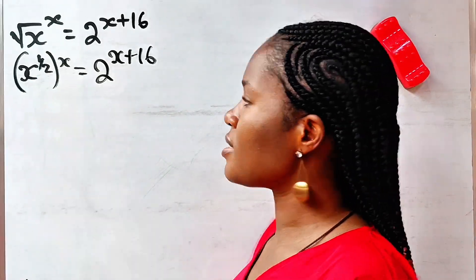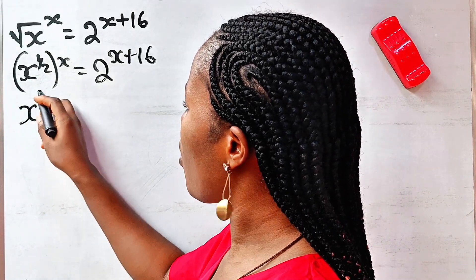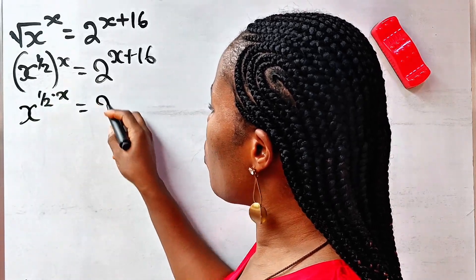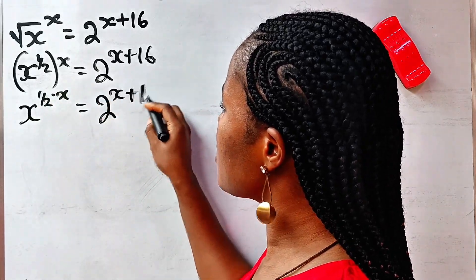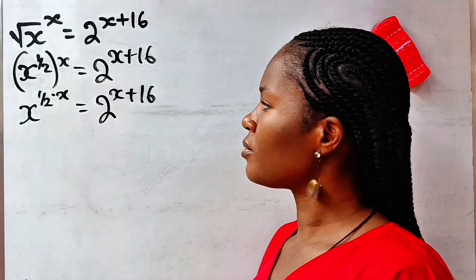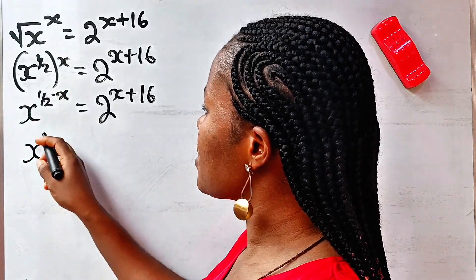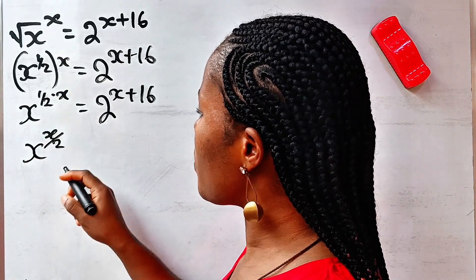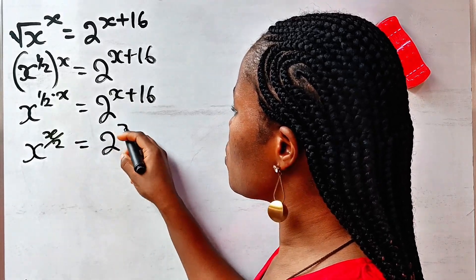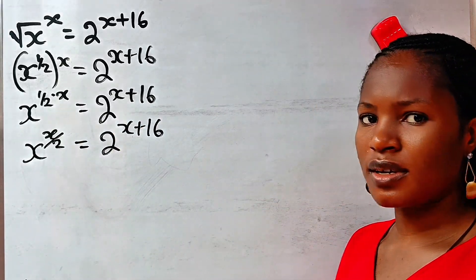So we will now write this as x to the power of half multiplied by x, is equal to 2 to the power of x plus 16. That gives us x to the power of x over 2, which is equal to 2 to the power of x plus 16.